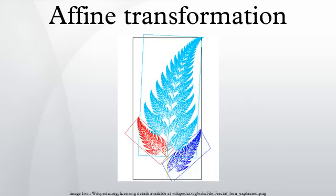An affine transformation does not necessarily preserve angles between lines or distances between points, though it does preserve ratios of distances between points lying on a straight line. Examples of affine transformations include translation, scaling, homothety, similarity transformation, reflection, rotation, shear mapping, and compositions of them in any combination and sequence.